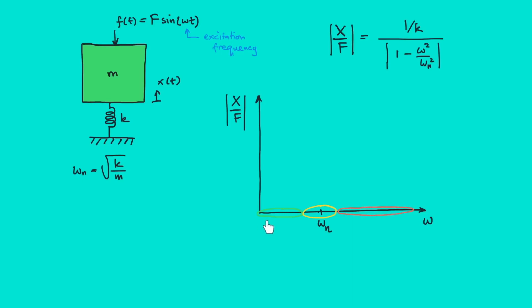Okay, let's start with the first region when ω is much smaller than ωₙ. So this term here will be much less than 1 or approaching 0. Let's say ω is 1 and ωₙ is 1 million.